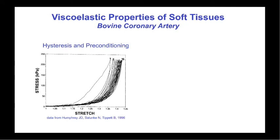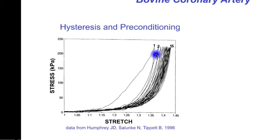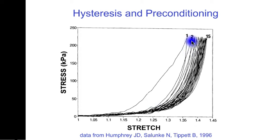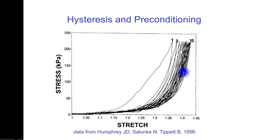Biological tissues frequently exhibit anelastic or nonelastic properties that are not associated with irreversible damage or failure. These include hysteresis, in which the stress-strain curve for loading is different from the stress-strain curve for unloading, and the area of the stress-strain loop represents the energy dissipated during the loading and unloading cycle. In this test on coronary artery, we also see preconditioning behavior, whereby the second cycle of loading and unloading is different from the first, and the third different from the second. But eventually, with sufficient repetitions, the stress-strain loop becomes reproducible and the tissue is said to be preconditioned.